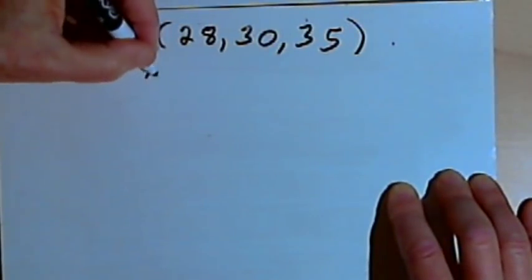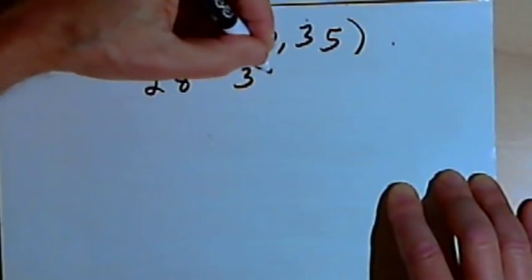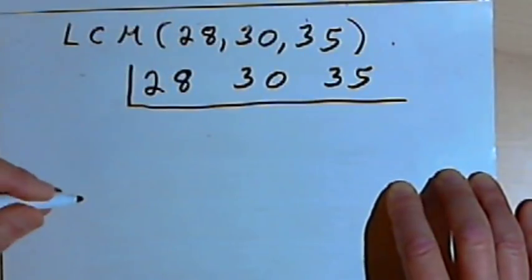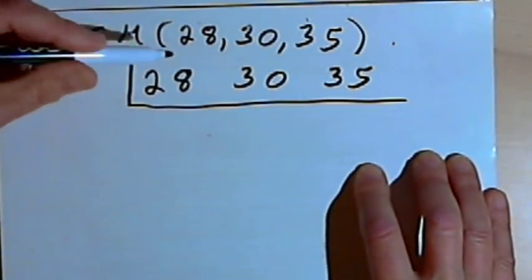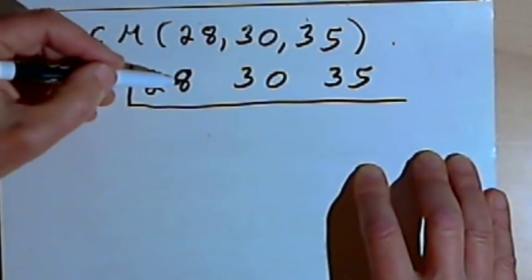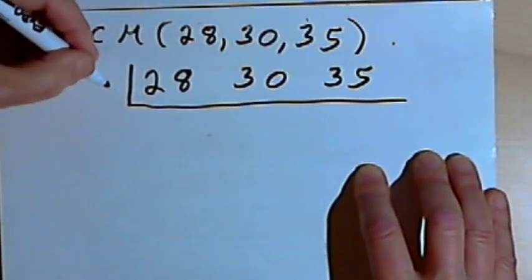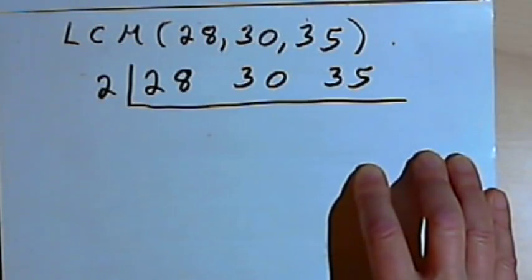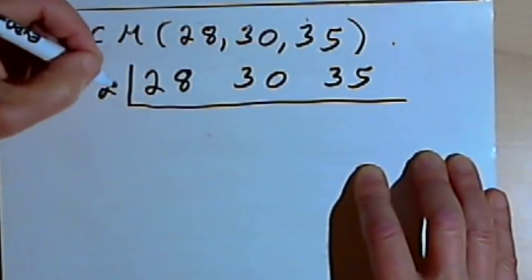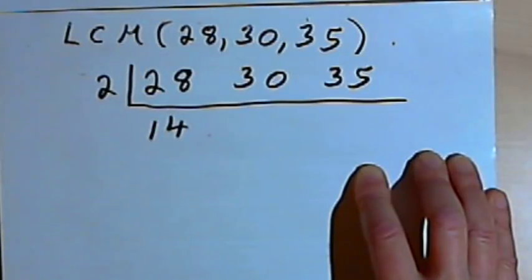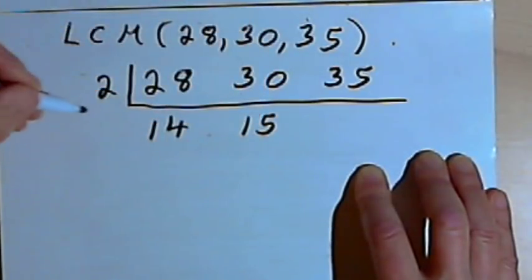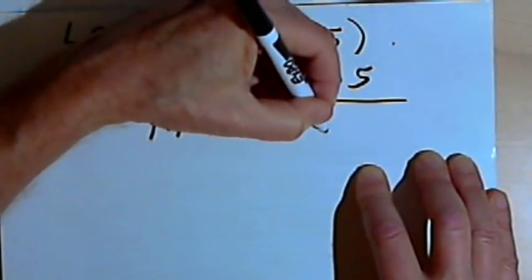Here's how it goes. I'm going to write those three numbers — 28, 30, and 35 — left to right, and put a kind of an upside-down division box around them. Now I want to see if I can divide any of these numbers by a prime number. Since 28 and 30 are both even, I can divide them both by 2. So I'll write a 2 to the left of the box and divide. 28 ÷ 2 = 14, 30 ÷ 2 = 15. 2 does not divide into 35, so I'll just bring down the 35.